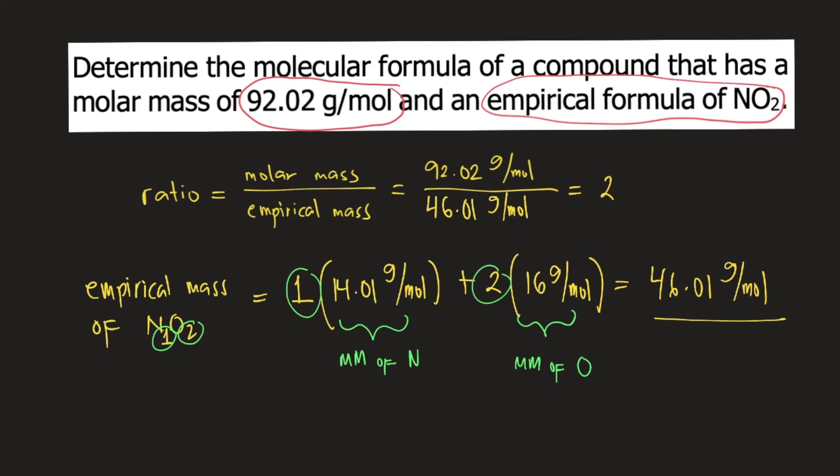So what do we do with this ratio? If we have the empirical formula N1O2, you multiply the subscripts by the ratio. The ratio is 2.